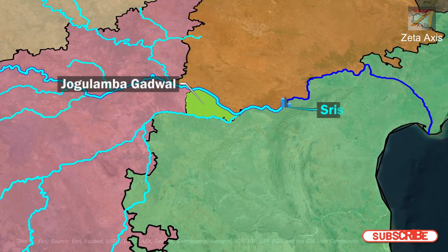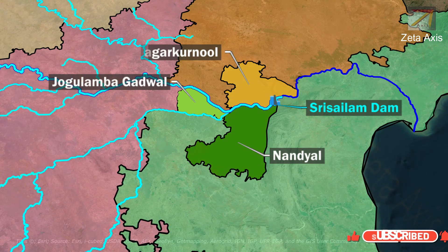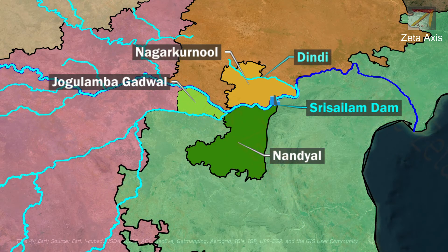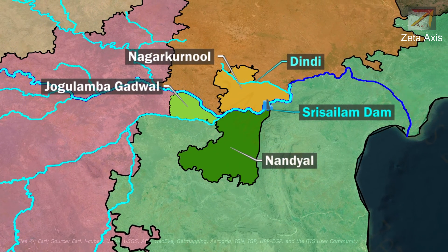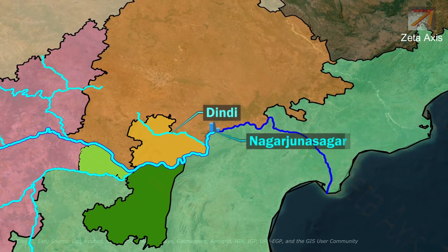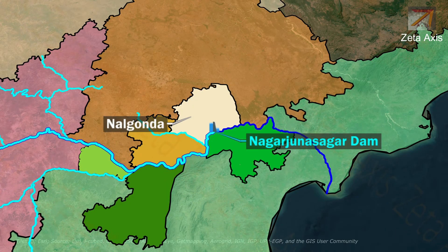Sri Selam Dam is constructed across the Krishna River in Nandyal district of Andhra Pradesh and Nagarkurnool district of Telangana. The Krishna River continues to flow along the Andhra Pradesh and Telangana border, where it meets the Dindi River originating from Telangana. A Dindi Reservoir is constructed on the Dindi River. Nagarjuna Sagar Dam is constructed across the Krishna River on the borders of Nalgonda district of Telangana and Palnadu district of Andhra Pradesh.